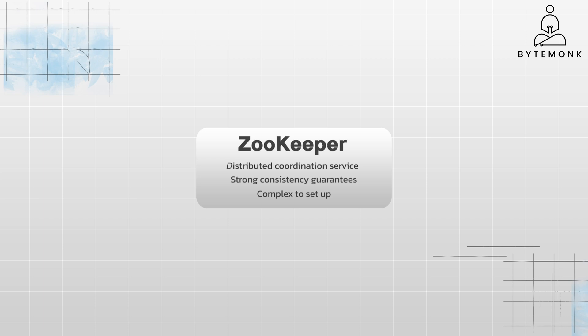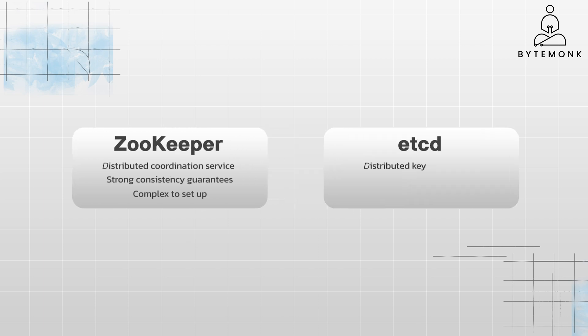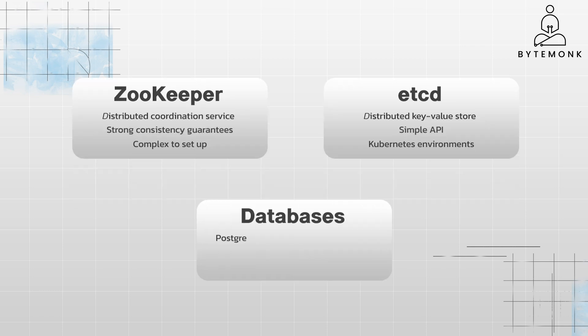etcd is a distributed key-value store similar to ZooKeeper and often used for distributed locking and configuration management. It provides a simple API and is known for its reliability and fault tolerance. It's a popular choice for cloud-native applications and Kubernetes environments. Some relational databases such as PostgreSQL and MySQL, and NoSQL databases such as MongoDB, do offer built-in locking mechanisms that can be used for distributed locking. This can be a convenient option if you are already using these databases for other purposes. However, database-based locking might not be as performant as specialized solutions like Redis or ZooKeeper, especially under high load.